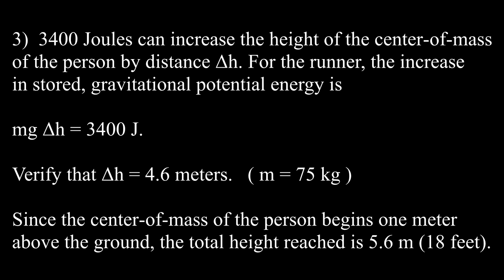Question 3: 3400 joules can increase the height of the center of mass of the person by distance delta H. For the runner, the increase in stored gravitational potential energy is mg delta H equals 3400 joules. Verify that delta H equals 4.6 meters. Remember that the mass is 75 kilograms. Since the center of mass of the person begins 1 meter above the ground, the total height reached is 5.6 meters.